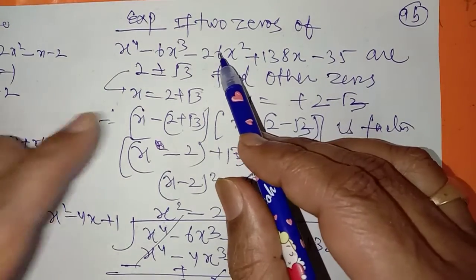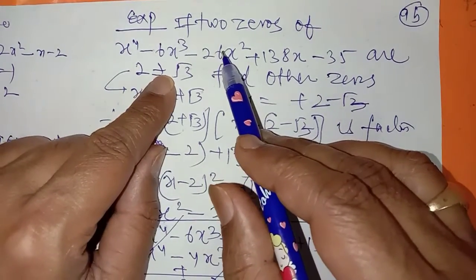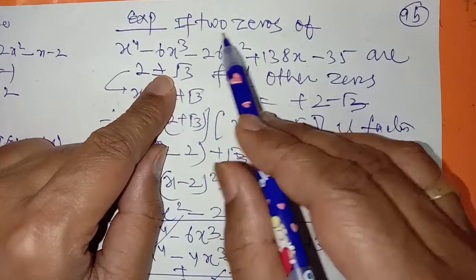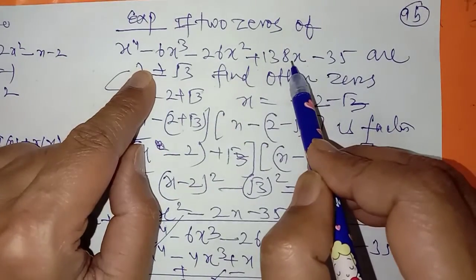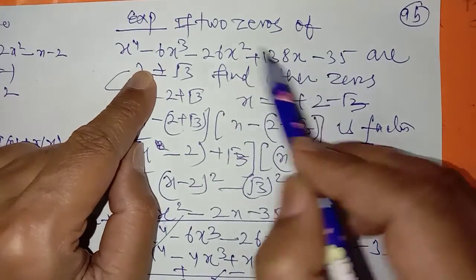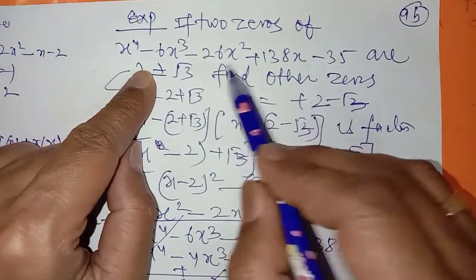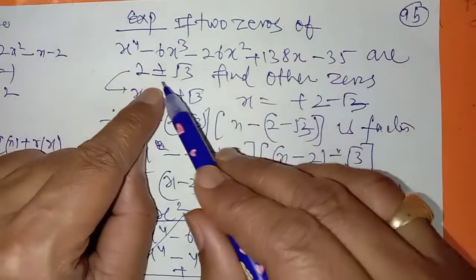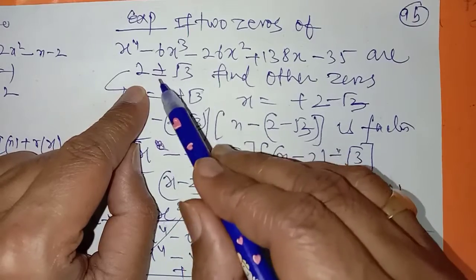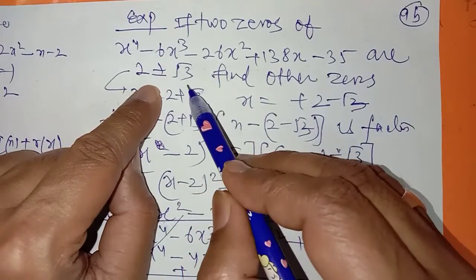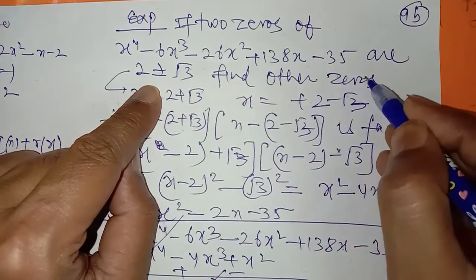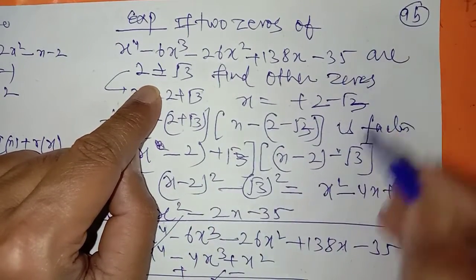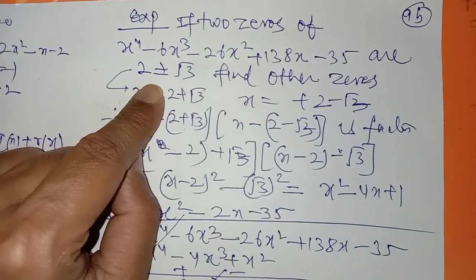I have taken this example: if two zeros of this polynomial — as in question number 3 — are 2 plus root 3 and 2 minus root 3, you have to find the other zeros.